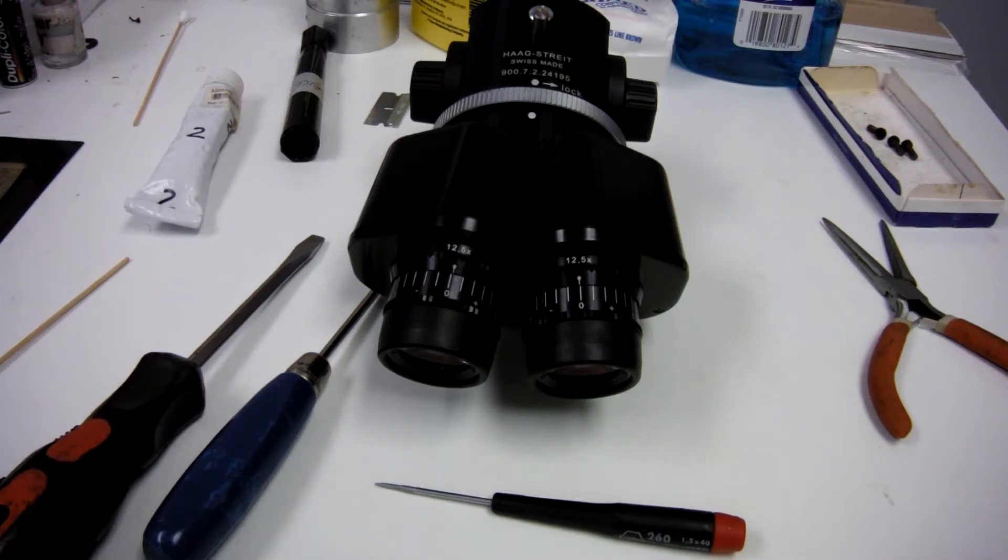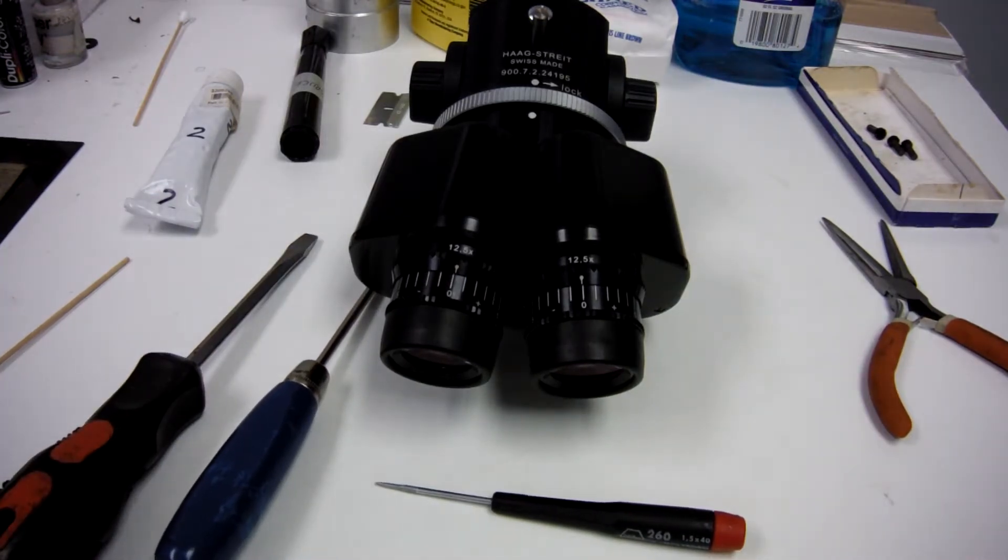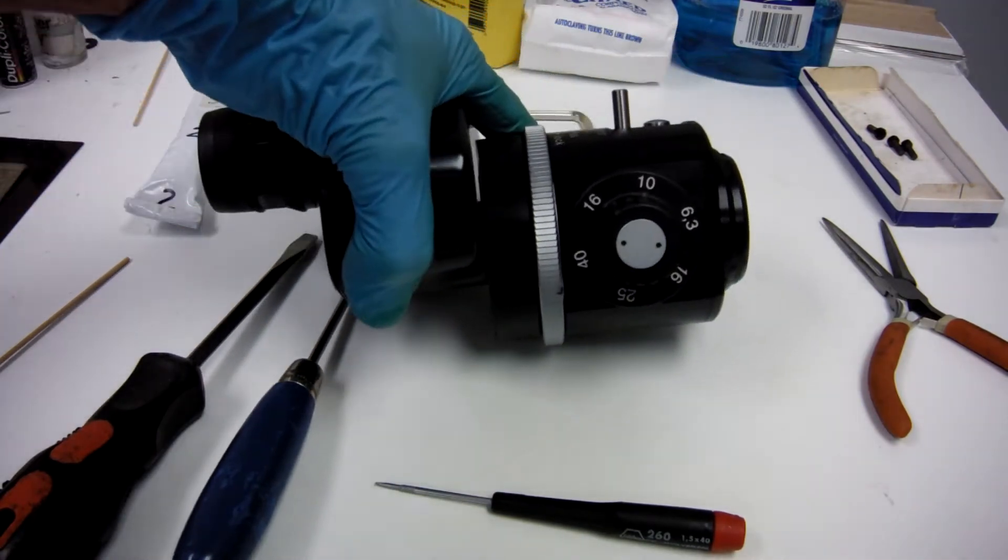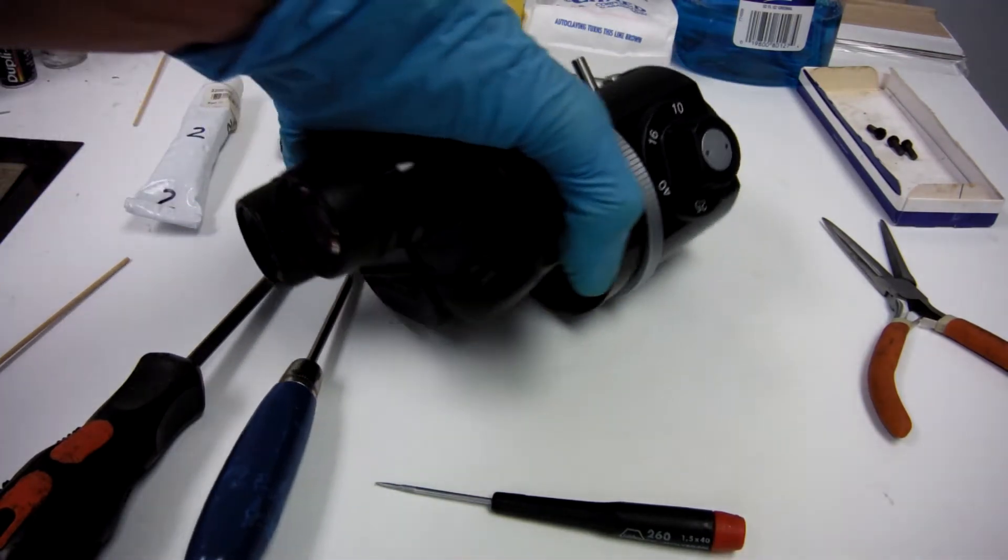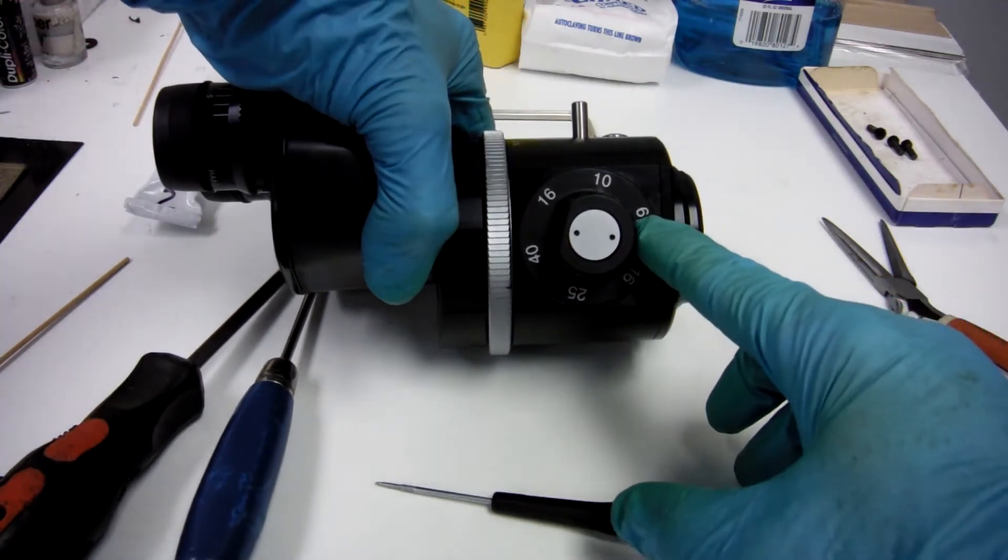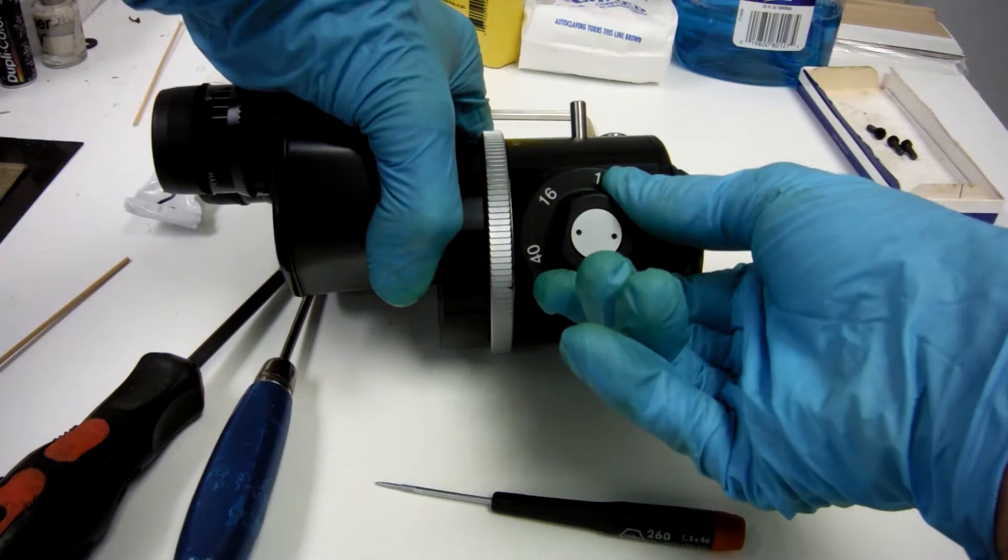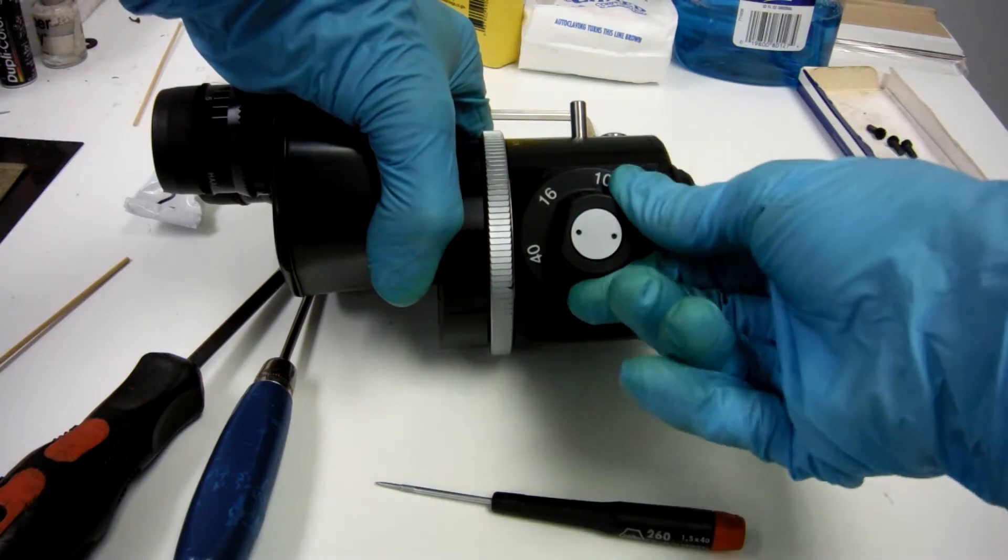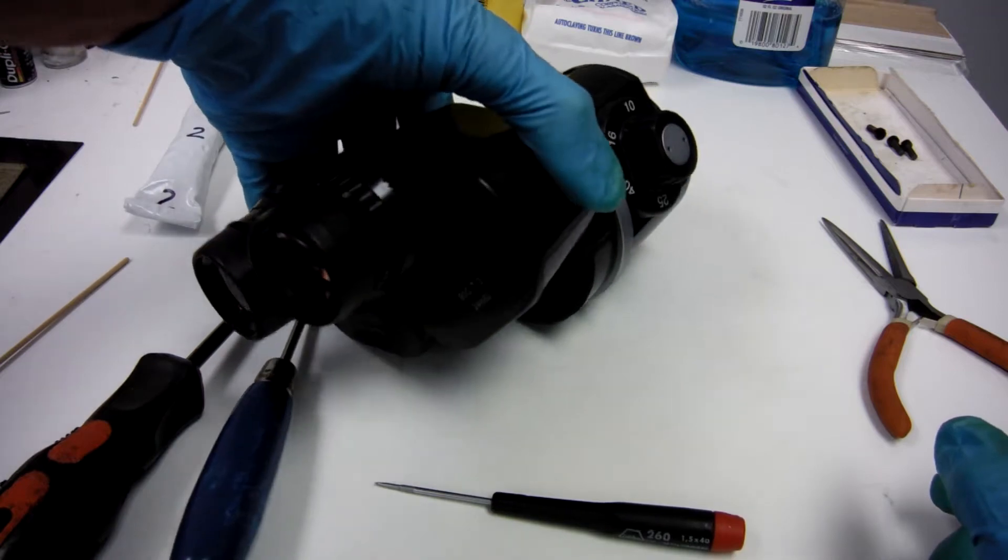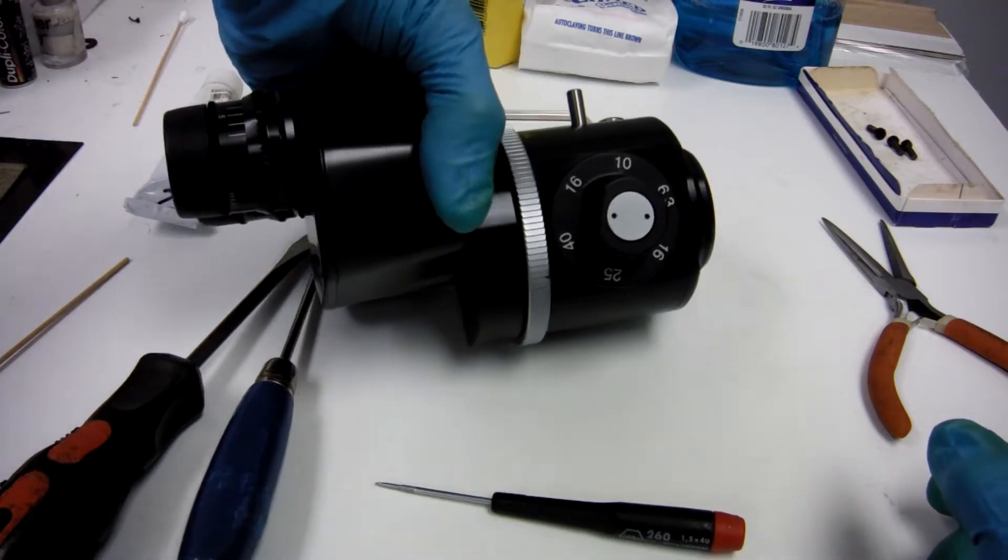Okay, this is a 900BQ with the rotating mag changer, and often times these mag changers get stiff, won't turn, and they need to be cleaned and re-lubed.